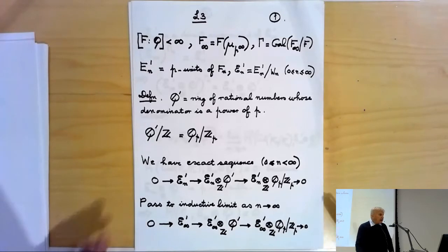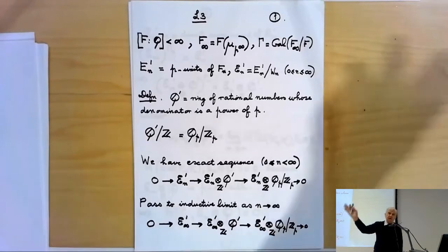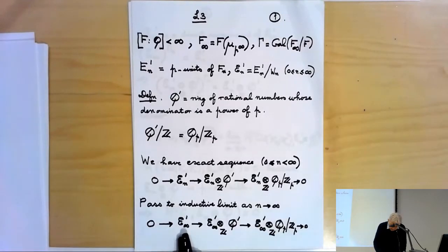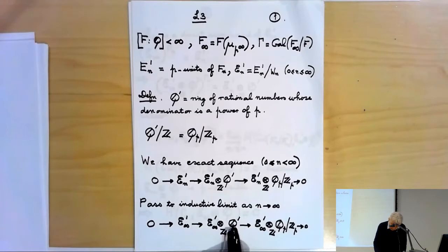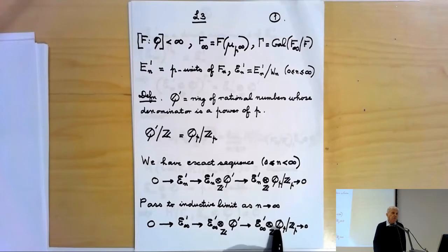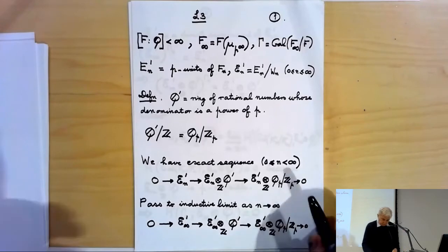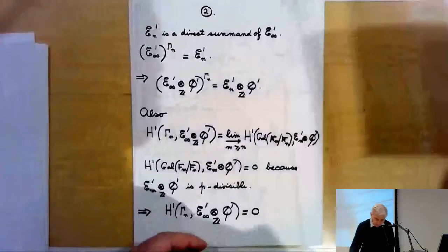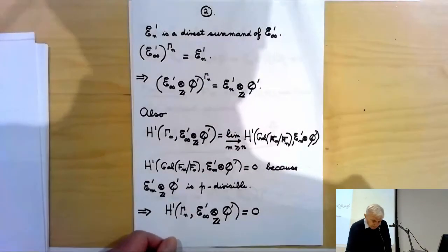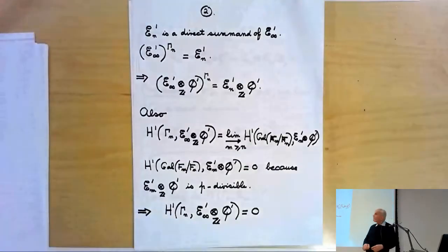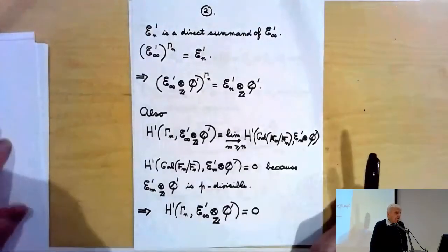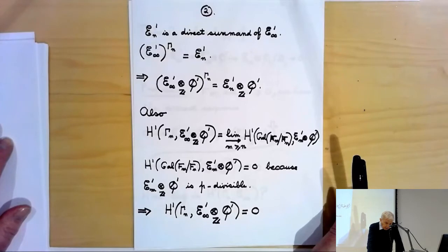We take the inductive limit over all n and get the sequence: E∞' → E∞' ⊗ Q' → E∞' ⊗ (Q_p/Z_p). Now recall that E_n' for every finite n is a direct summand of E∞' — this is a result I gave a very simple argument for at the end of the last lecture.